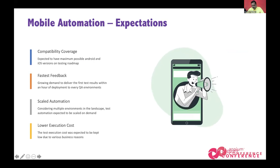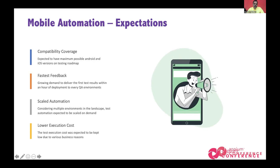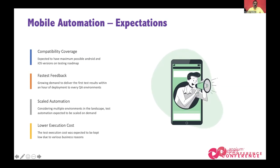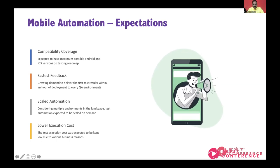There were four mobile automation expectations when starting this project. First, compatibility: covering Android 8 up to 11 and 12, and similarly for iOS versions across different iPhones and iPads. Second, faster feedback: completing test results within 60 minutes. Third, multiple test environments — we had dozens of environments and too many apps to run across multiple hubs. Fourth, lowest execution cost — we'll talk about the actual costing later.